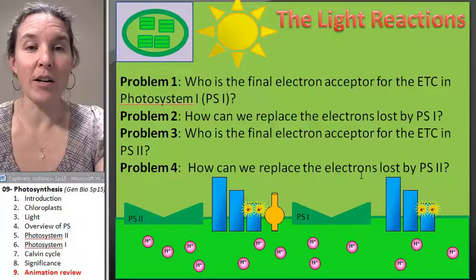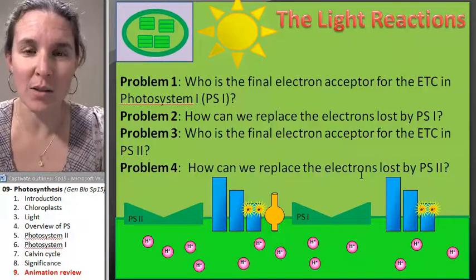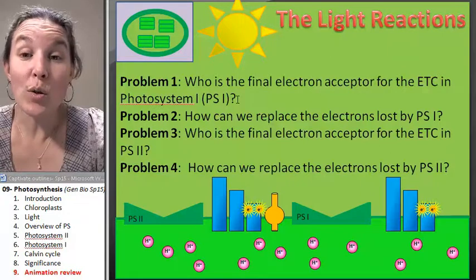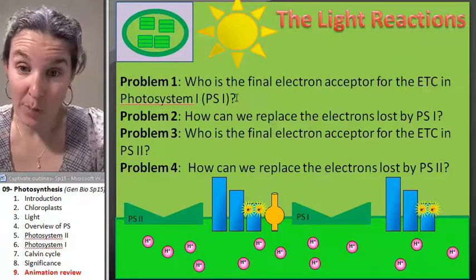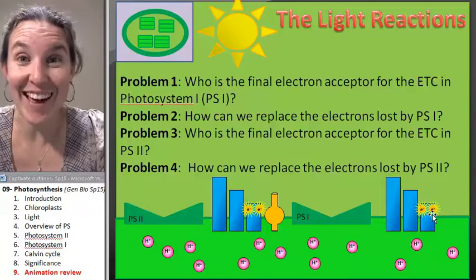We already know that these are our problems. I actually wrote down the words. Well, let's look at what the problems say. Who's the final electron acceptor for photosystem one? You know the answer to that, don't you?